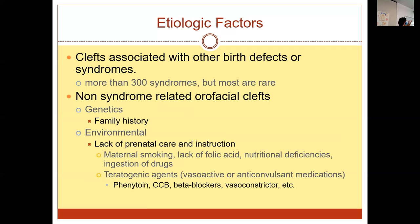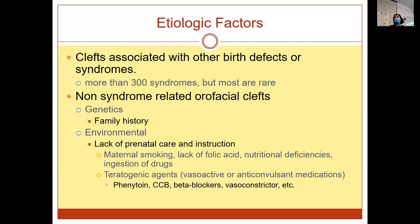It can be associated with a syndrome. Something genetically gets disrupted during embryonic formation, and there are more than 300 syndromes that could occur — mostly rare. We also look at genetics, family history, and environmental factors: something the mother was doing during pregnancy or wasn't able to access, like certain nutrients. Perhaps they were ingesting a drug. It can also be linked to vasoactive or anticonvulsant medications — calcium channel blockers, phenytoids, beta blockers, or vasoconstrictors — which have possibly been indicated as something that could trigger a cleft lip or palate.